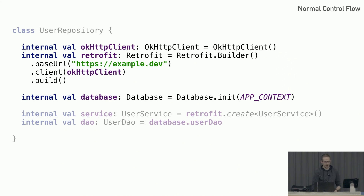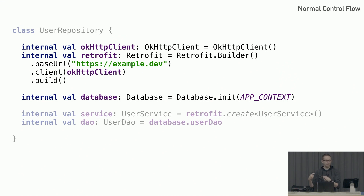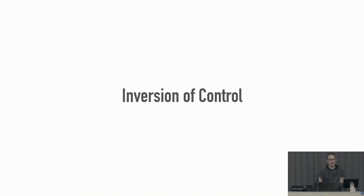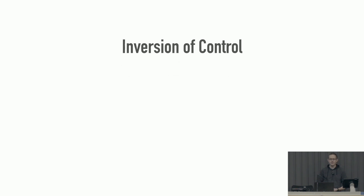Nobody wants to type that. Every time you copy and paste it, you're introducing risk for error. And if you have hard-coded dependencies at the edge of your application — like you need an actual database and an actual Retrofit service — how do you test those? You could use RoboElectric for the database, test against an actual API (which is beyond horrible), or use a proxy or WireMock, but nobody wants to do that.